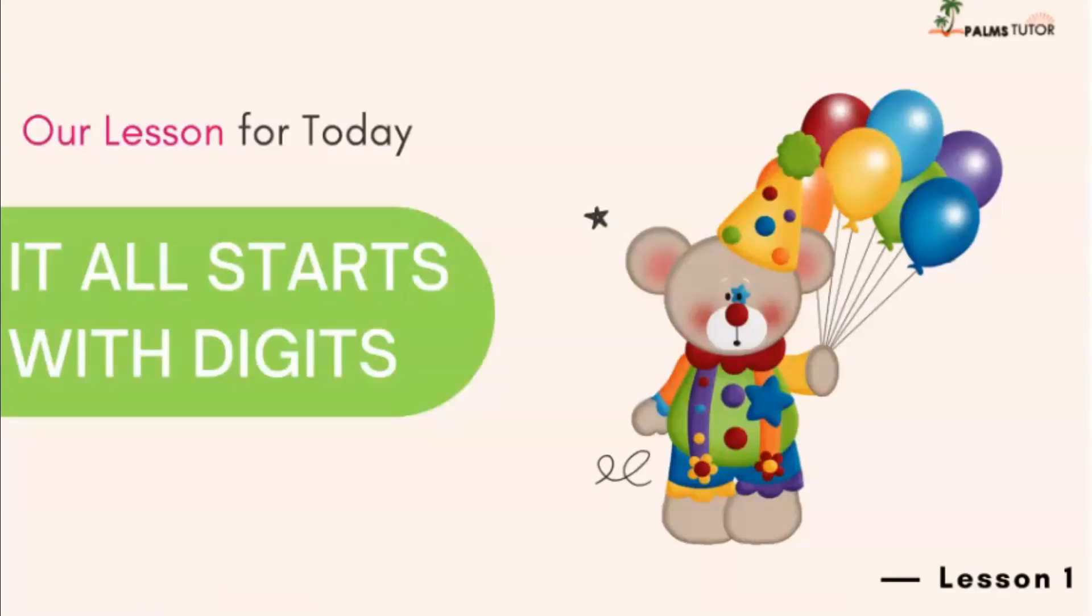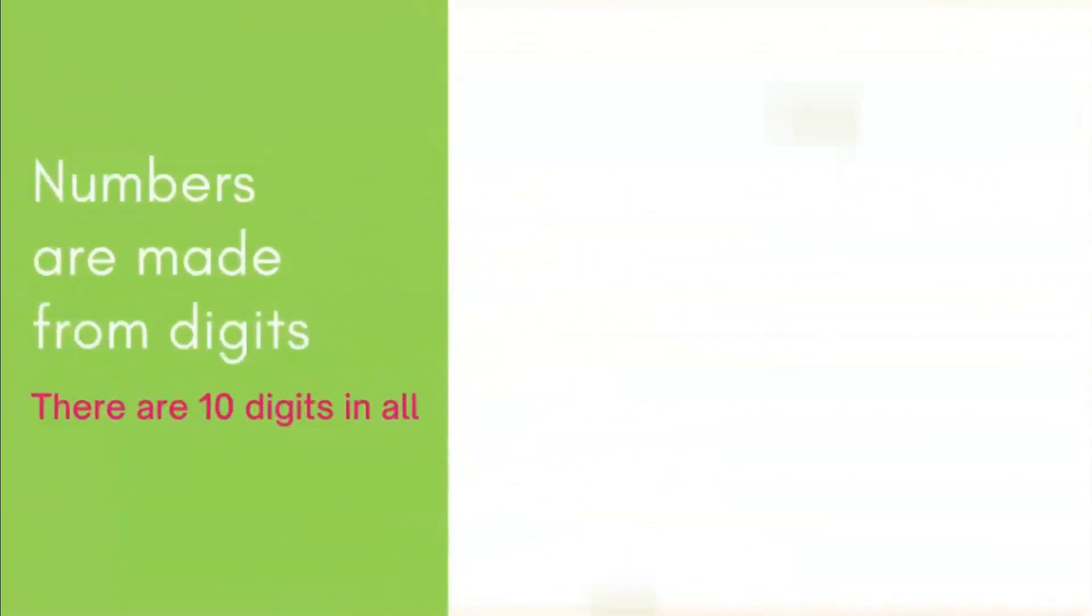It all starts with digits. What does that mean? How do we form numbers? Numbers are made from digits. You know, just like we make a cake from flour and sugar and milk and maybe butter, numbers are made from digits. So we put digits together in different ways to form numbers.